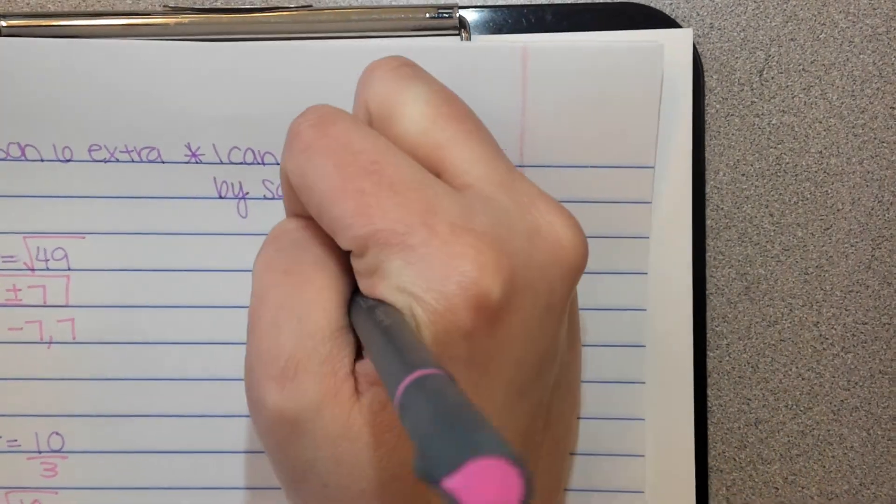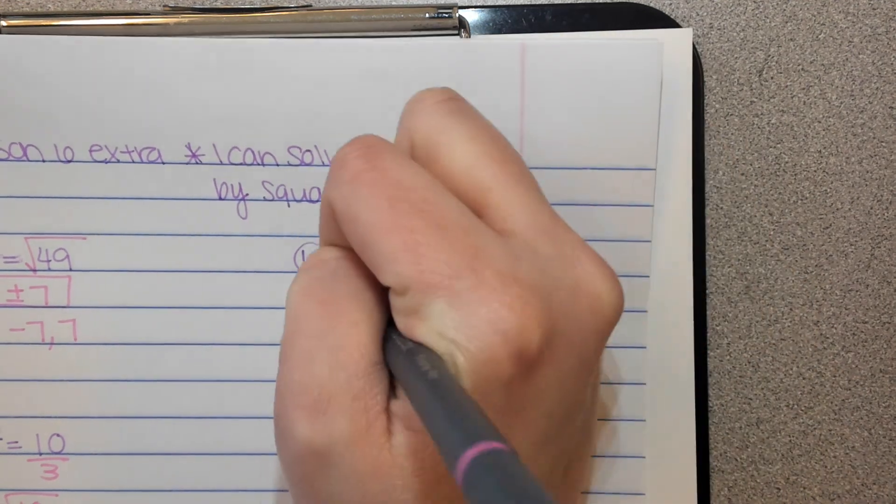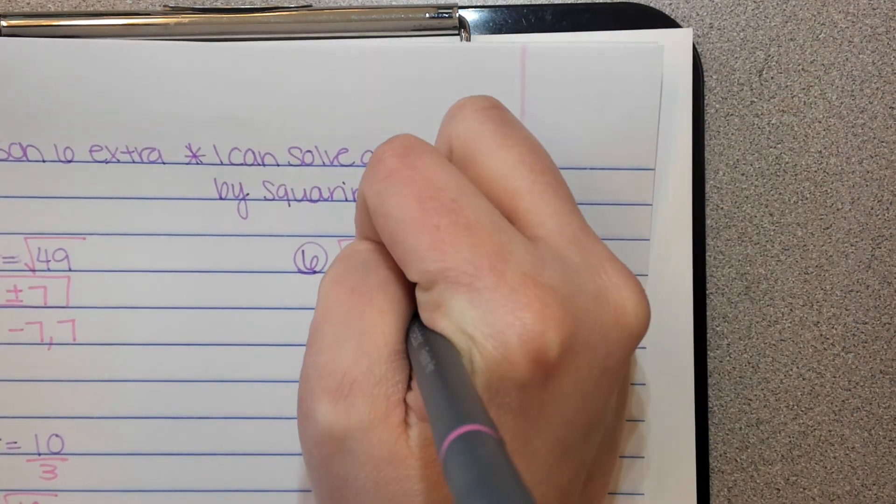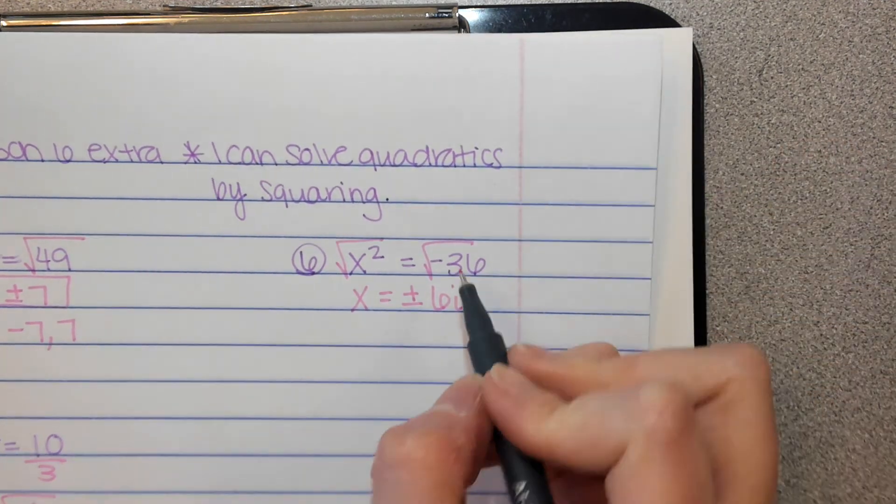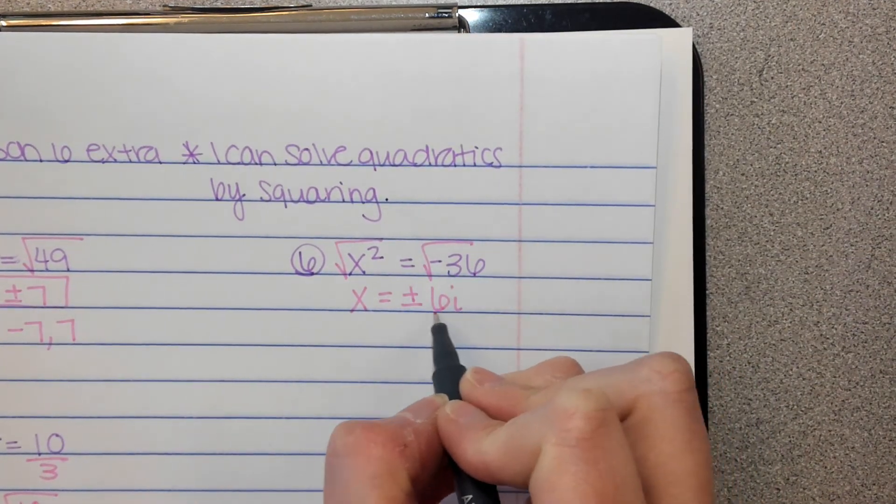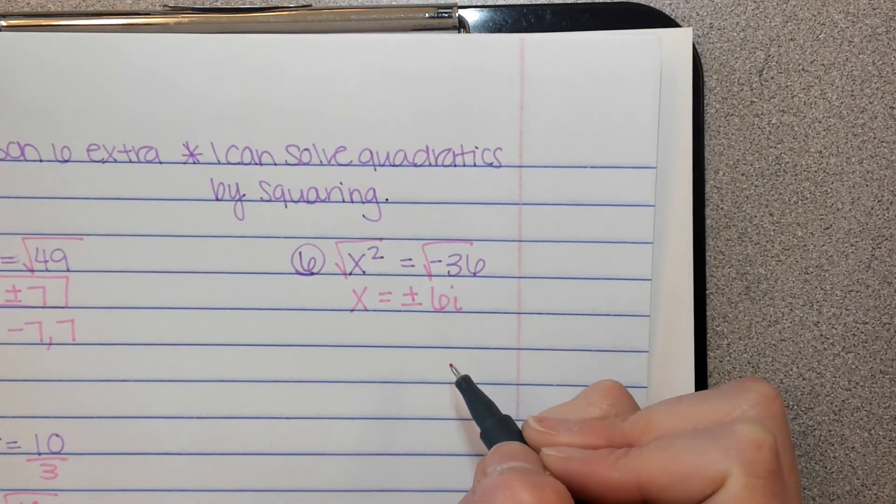And then last, number 6, take the square root of both sides and we get x equals plus or minus 6i. So the square root of negative 36 is 6i. You can get the positive or the negative.